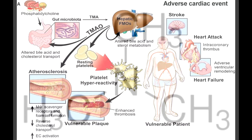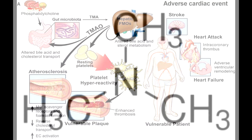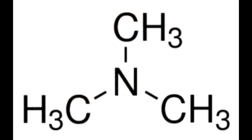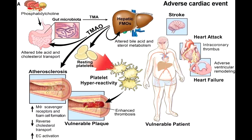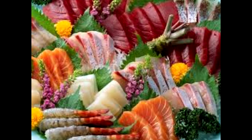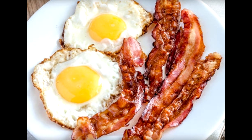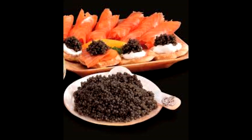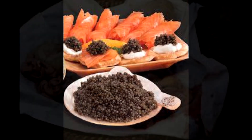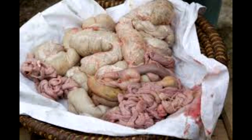Choline is another molecule that ends up as TMAO. Choline molecules are abundant in beef, fatty fish like salmon and tuna, eggs, poultry such as chicken and turkey, fish and caviar, and all of the innards, intestines, and organs of beef, poultry, and pork.